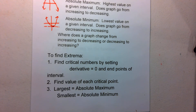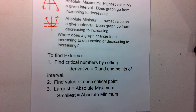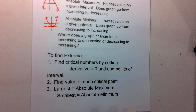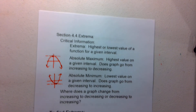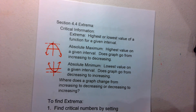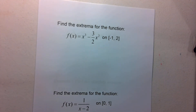We're also going to look at what the endpoints are, making sure the endpoints are included, and any points within the given interval where the derivative equals zero. We find the value of each of those critical points. The largest value is going to be the absolute maximum, and the smallest is going to be the absolute minimum. Let's go ahead and look at an example.